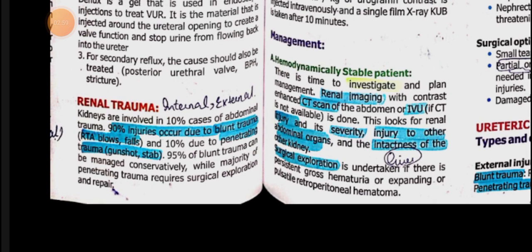90% of renal injuries are blunt. Then there are penetrating injuries — where a wound or sharp object penetrates into the kidney region and goes deep inside. So renal trauma can be of two types: blunt and penetrating.